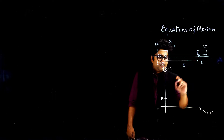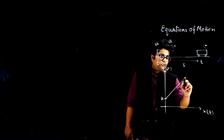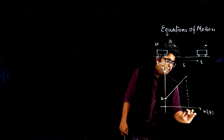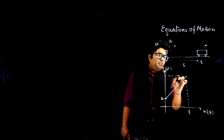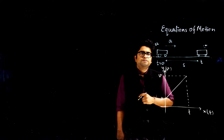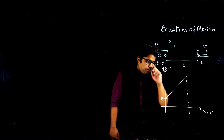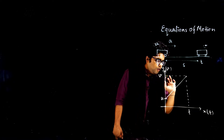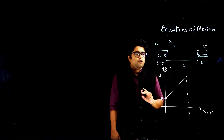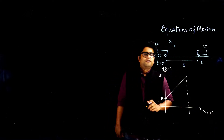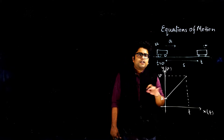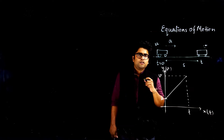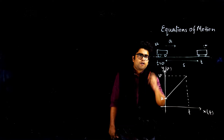The car is moving uniformly and at time t, the velocity is now v. So at t = 0, velocity was u, and at time t, my velocity is v. This is how the graph looks. Now I will try to find out different things using this graph — the first being the acceleration of this vehicle.